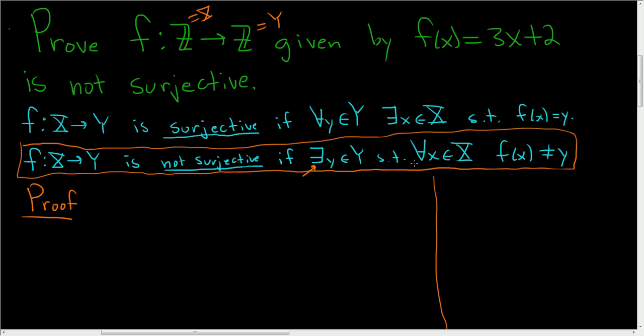This is the set of integers. We have to think of an integer such that 3x + 2 is not equal to that integer. Let's try 0 - it's the easiest one to try. Is it possible for f(x) to be equal to 0? Could 3x + 2 equal 0? If it was, then we would subtract 2 and get x equals negative 2/3.